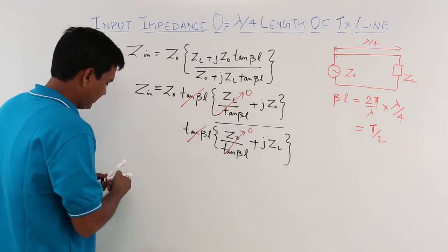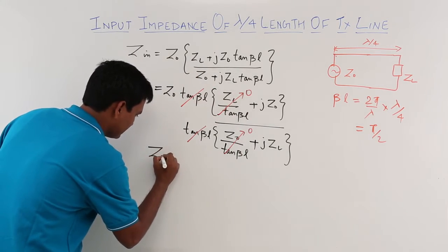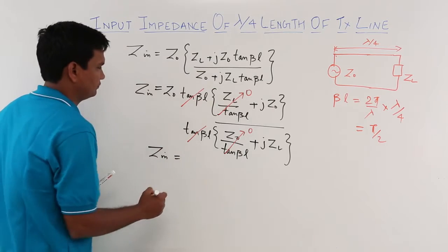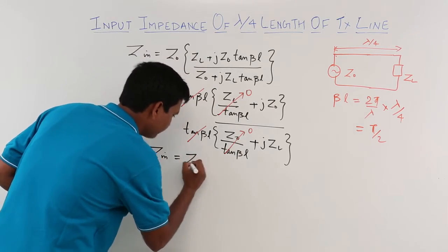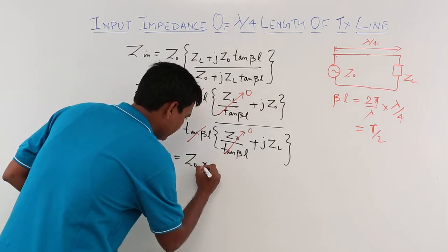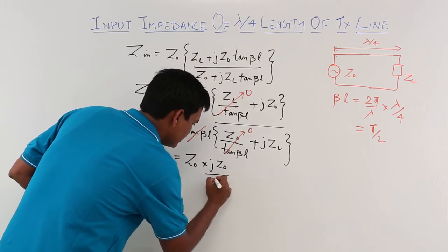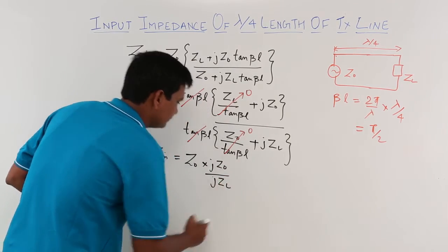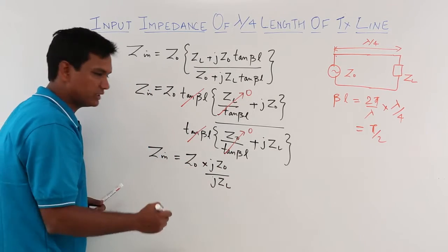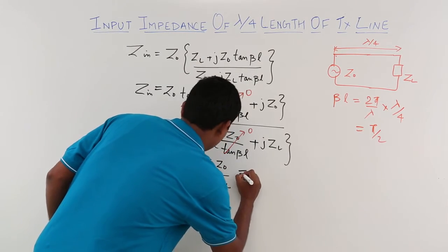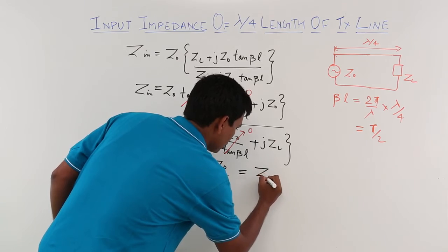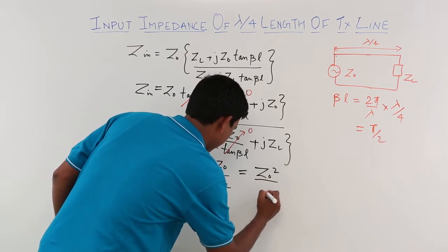What I am left with is zin equals z0 times jz0 divided by jzl. If I simplify this, it becomes z0 square by zl.